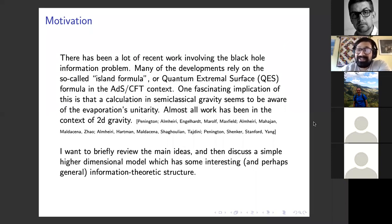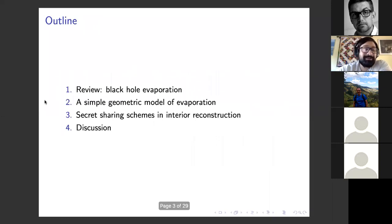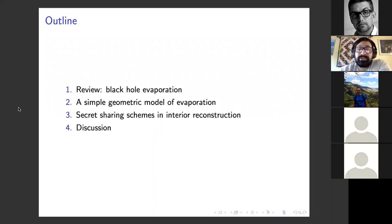Before I go on, I should say I can't see anybody's face, so please just unmute yourself and shout out if you have a question. Here's the outline: we'll first start with a review of black hole evaporation, then discuss a simple geometric model of evaporation. The last section will be about secret sharing schemes — you'll understand the title — and the reconstruction of the black hole interior. We'll conclude with some discussion.